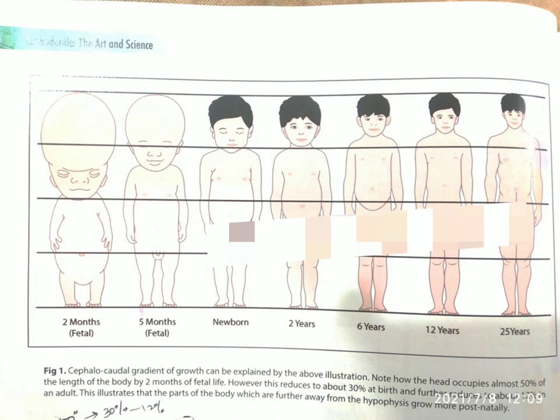At the time of birth, the trunk and limbs have grown more than the head, reducing the head to about 30 percent of the total body length. So from 50 percent at two to three months of intrauterine life, the head reduces to 30 percent at birth. The lower limbs grow progressively, and by adulthood the head occupies only 12 percent of the total body length.